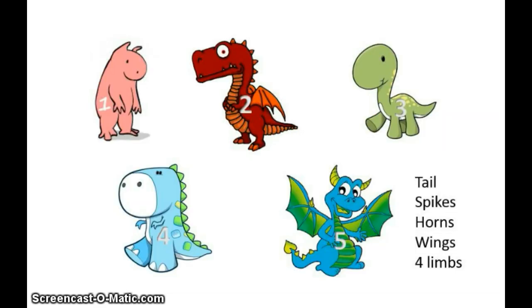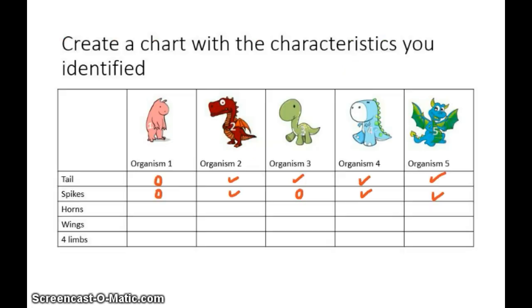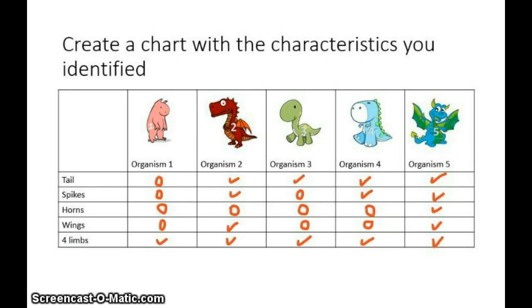My next characteristic is horns. I see horns in five. Do you see horns in anything else? Let's add that to our data table. Now go ahead and complete the table for wings and for limbs. Your data table should now look like mine.